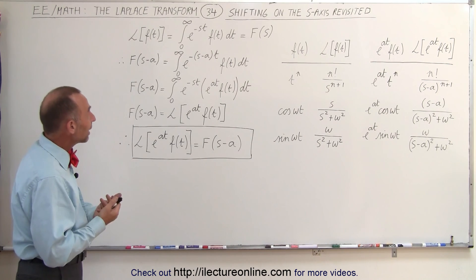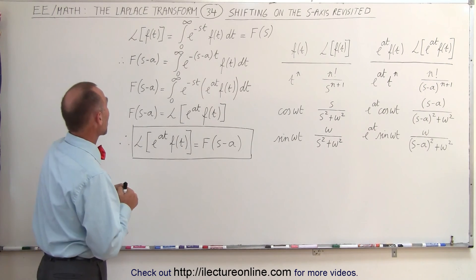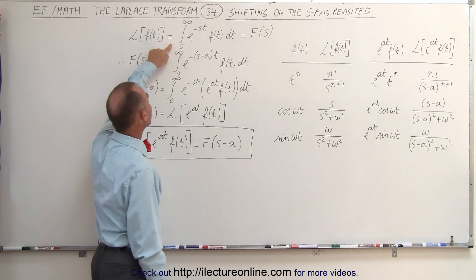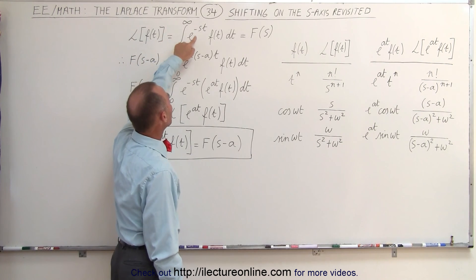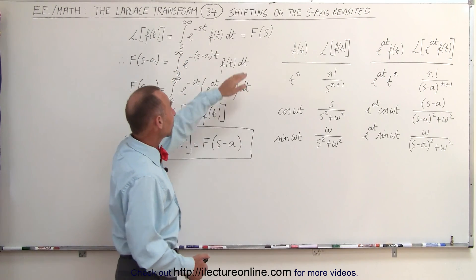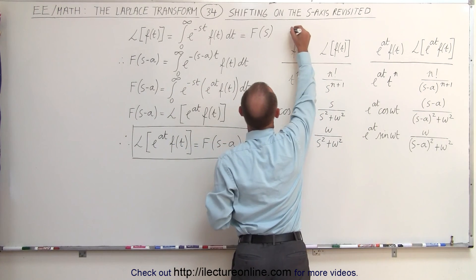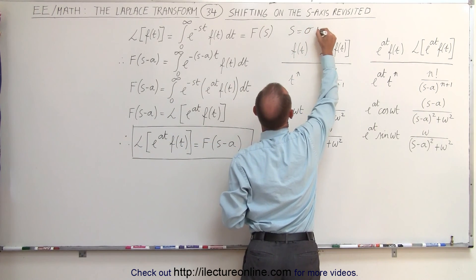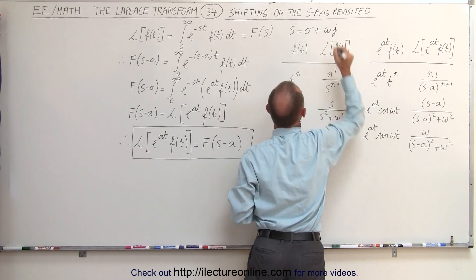What we mean by that is as follows. Let's go back to the original definition of the Laplace transform. The Laplace transform of a function can be written as the integral from zero to infinity of E to the minus ST times the function, and then we get the transfer function F of S, where S is the complex number equal to sigma plus omega times J.